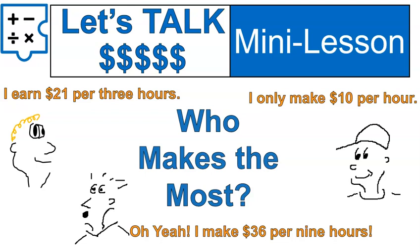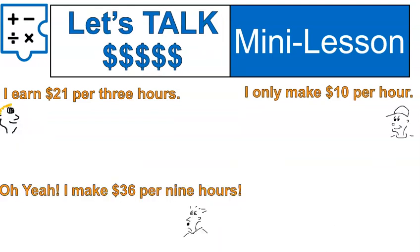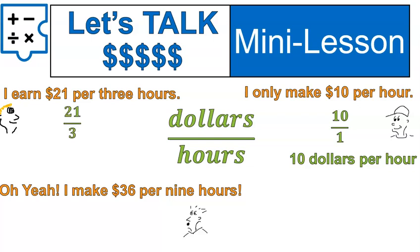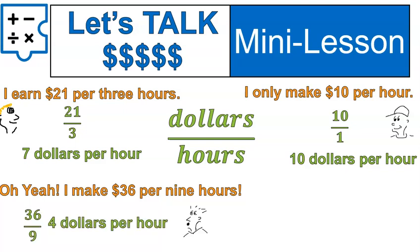Now let's get back to figuring out who makes the most between these three characters. All we need to do is do some quick division or set up a couple of fractions. $10 per hour is 10 over 1 — $10 per one hour. $21 per 3 hours: 21 divided by 3 equals 7, so this guy makes $7 per hour. And $36 per 9 hours: 36 divided by 9 means he's making $4 per hour. Now we can compare dollars per one hour and see who's making the most — and it's actually the person who said the least, the smallest number.